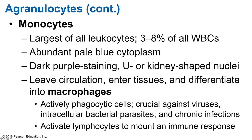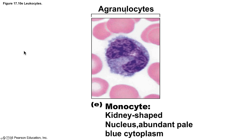Monocytes are the largest of all white blood cells, with an average cell diameter of about 18 micrometers. They account for about 3–8% of all WBCs. They have a large blue cytoplasm and a dark purple staining nucleus ranging from U- to kidney-shaped. Monocytes leave the bloodstream and enter the tissue, where they differentiate into highly motile macrophages — 'macro' means large and 'phage' means to eat, so macrophages are big eaters. They are crucial to the body's defense against viruses, intracellular bacterial parasites, and chronic infections like TB.